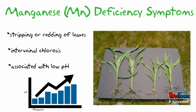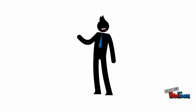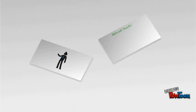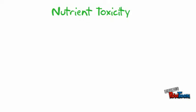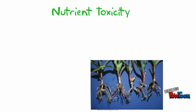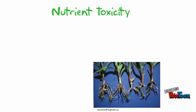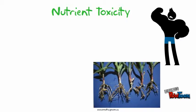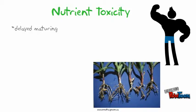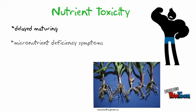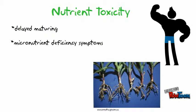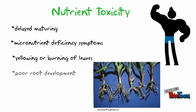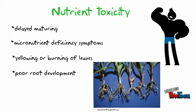Nutrient toxicity is another problem associated with important nutrients in corn production, and is caused by the uptake of excess nutrients. Symptoms include delayed maturity, micronutrient deficiency symptoms, yellowing or burning of leaves, and poor development.